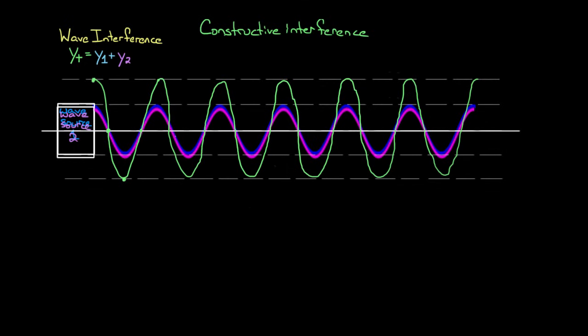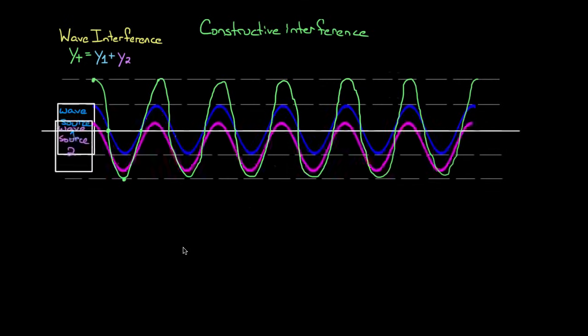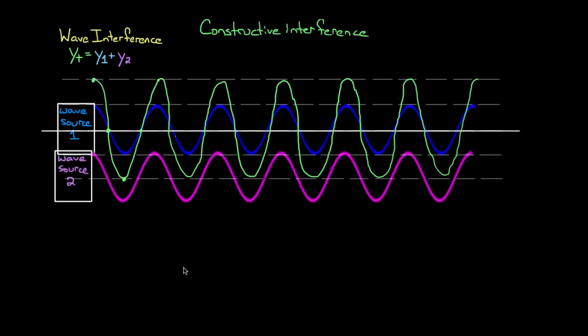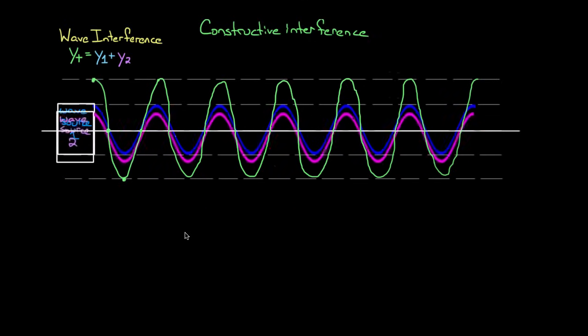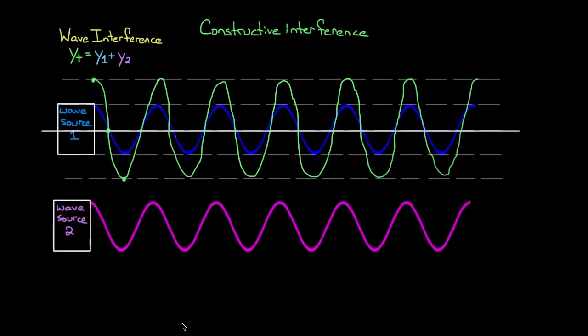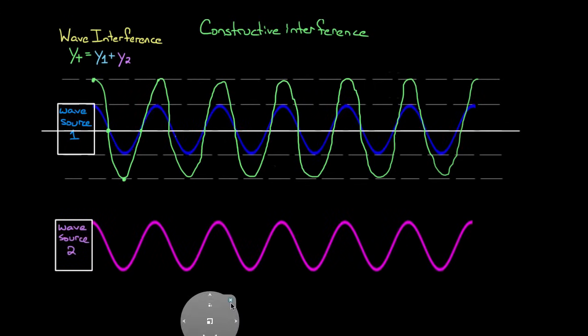These waves were constructive because wave source two looked exactly like wave source one, and we just overlapped them and got double the wave — which is kind of like, all right, that's not that impressive. But check this out.